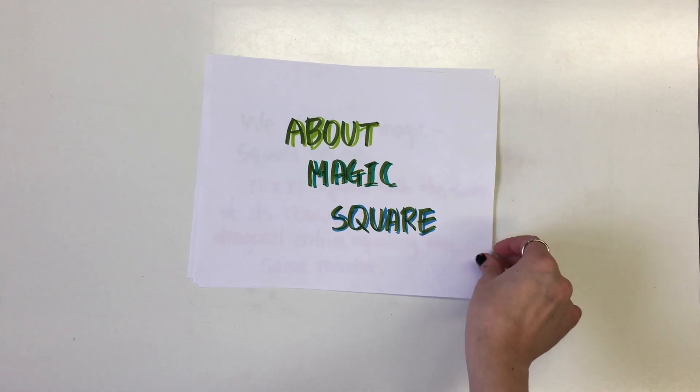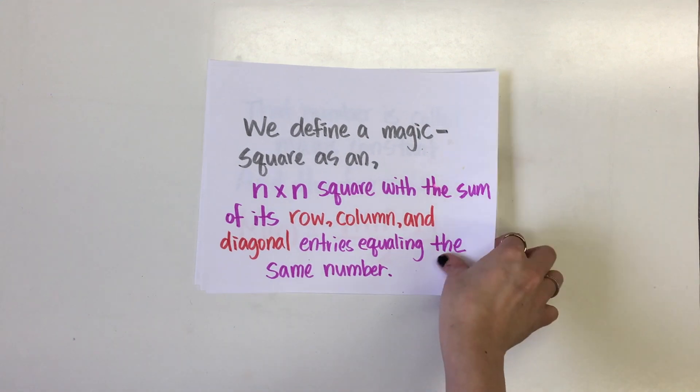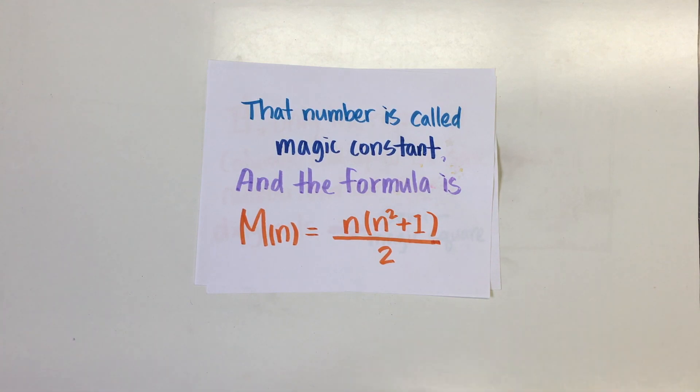We technically define a magic square as an n by n square with the sum of its row, column, and diagonal entries equaling the same number. That number is called the magic constant and can be calculated with the formula m(n) = n(n²+1)/2.